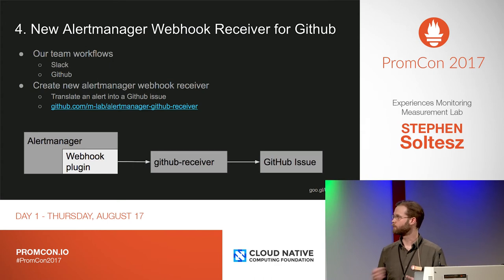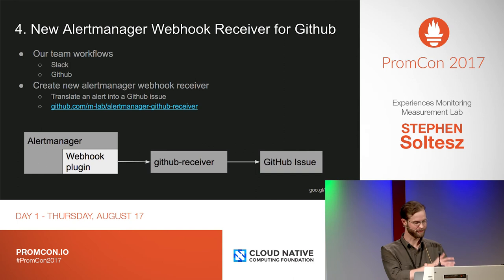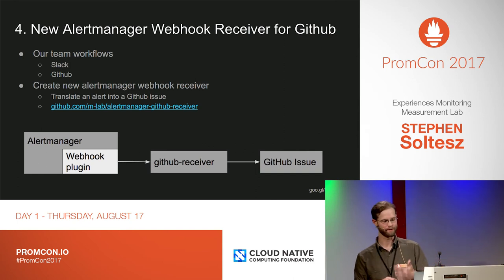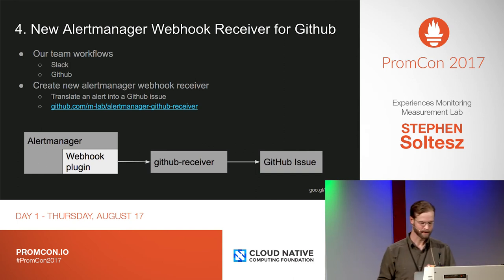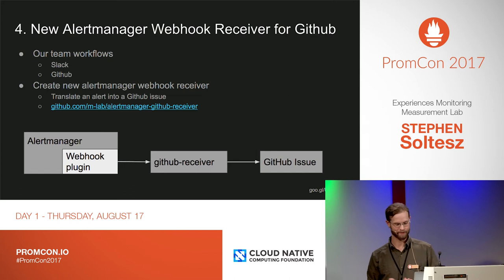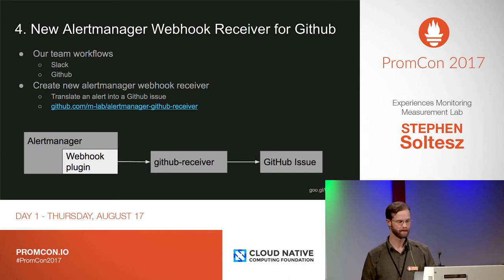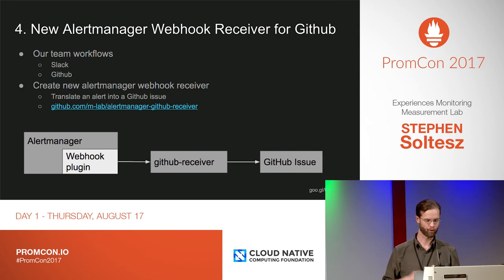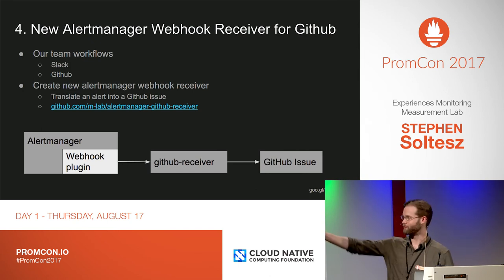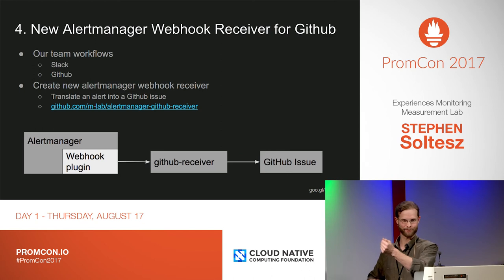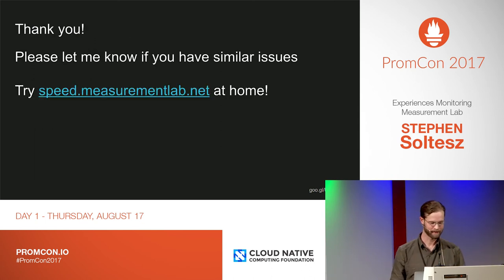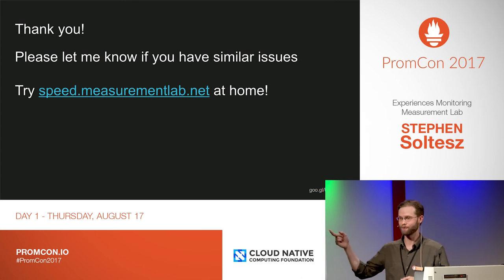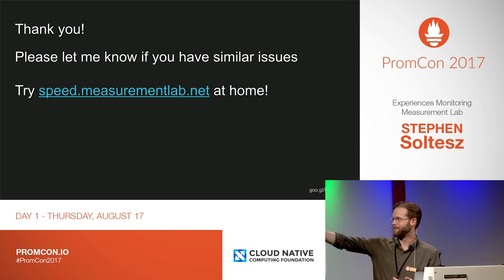A new alert manager webhook receiver for GitHub. Not only do we have operational dependencies on Nagios, but Nagios sends notifications by email. We do not want to repeat those mistakes from the past. At this point, our team has mostly been working from GitHub and Slack. So we use the alert manager's webhook API, GitHub's API, and created the GitHub receiver. Please let me know if you've solved similar problems. Thank you very much.